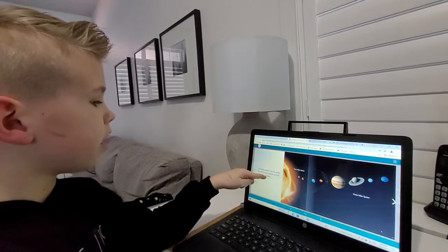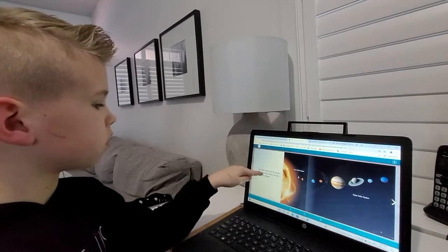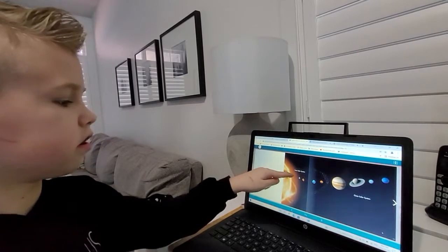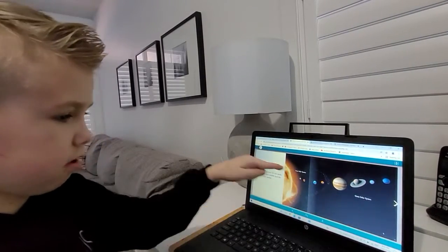Our solar system has two parts: the inner solar system and the outer solar system.